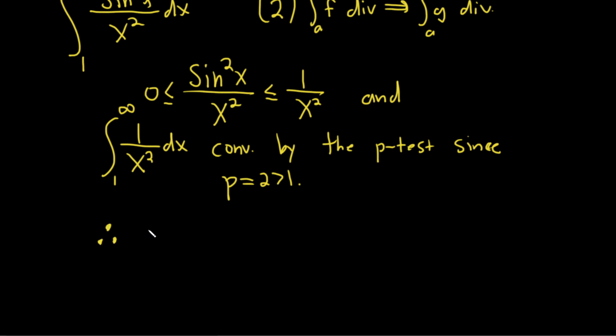our improper integral also should converge by the comparison test. So therefore, our original integral, I'll just say OG, OG means original, converges by the comparison test.